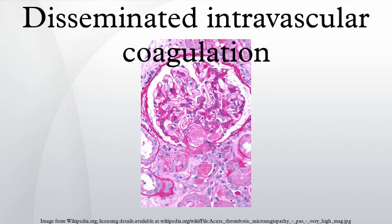Excess circulating thrombin results from the excess activation of the coagulation cascade. The excess thrombin cleaves fibrinogen, which ultimately leaves behind multiple fibrin clots in the circulation. These excess clots trap platelets to become larger clots, which leads to microvascular and macrovascular thromboses. This lodging of clots in the microcirculation, in the large vessels, and in the organs leads to ischemia, impaired organ perfusion, and end organ damage. Coagulation inhibitors are also consumed in this process, and decreased inhibitor levels permit more clotting, creating a positive feedback loop.